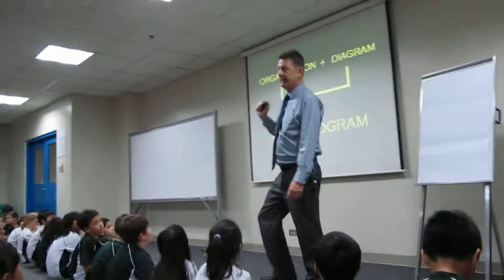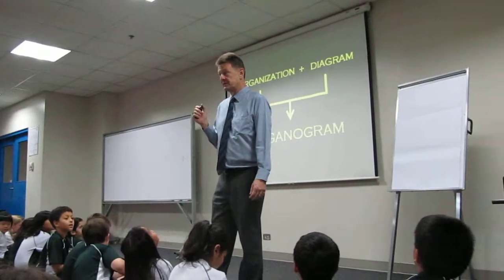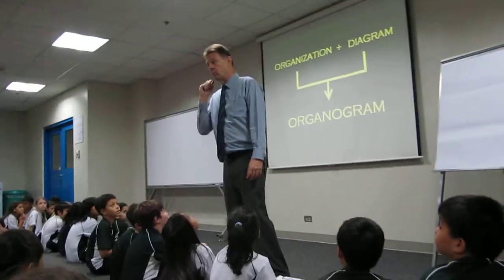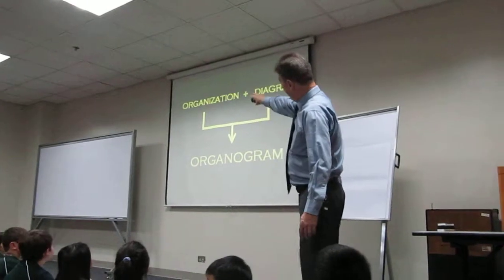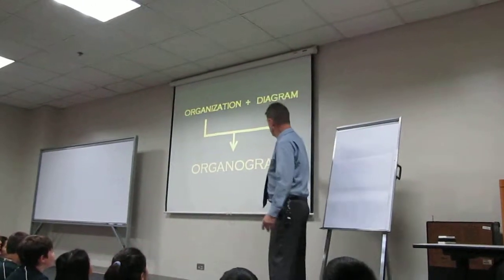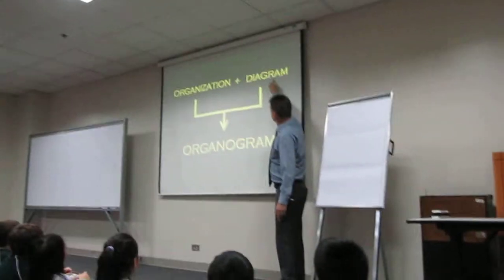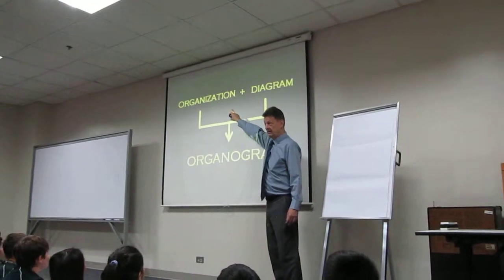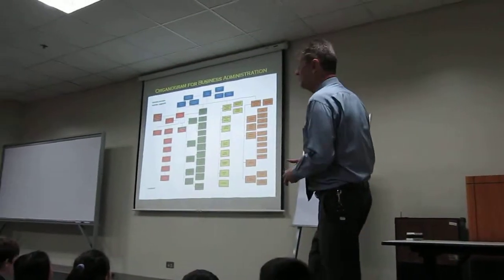I've been asked to talk about the way in which we organise our schools. Because of that, I'm going to show you what we call an organogram. At the top, you can see the two words that make up the word organogram. An organogram is a diagram of the organisation of the school. We actually have two organograms.